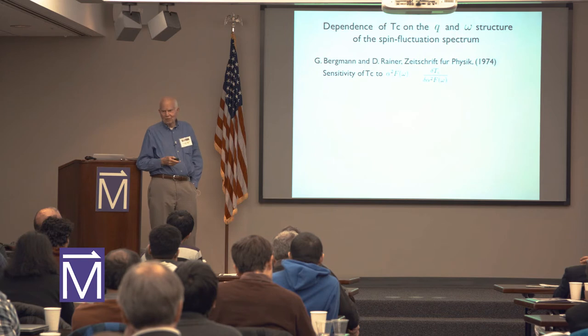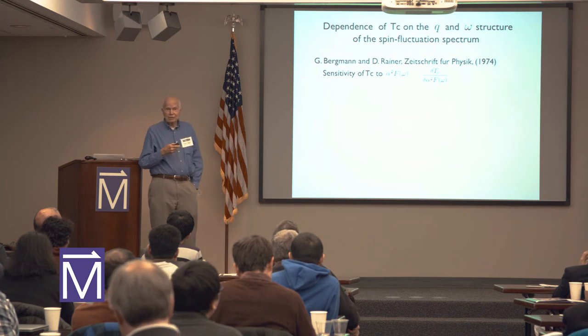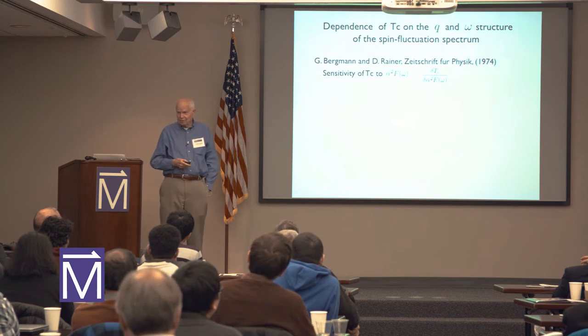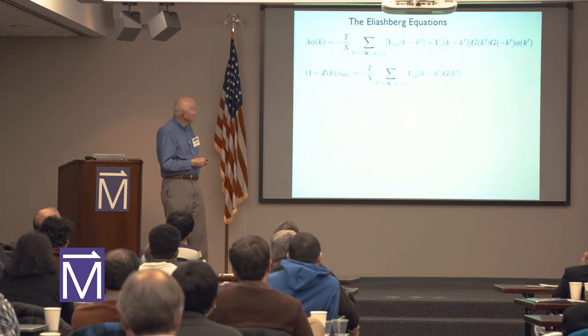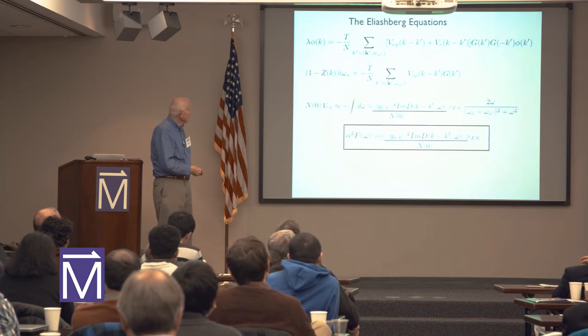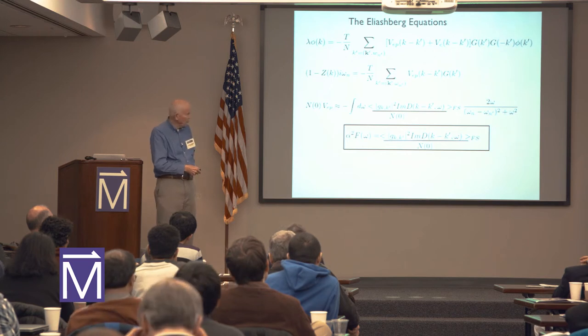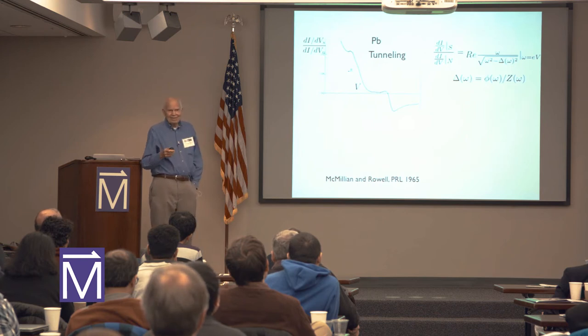We have to go back in time because this question was already addressed for the electron-phonon system by Bergman and Rainier, who wanted to understand the sensitivity of TC to alpha squared F omega. They calculated the functional derivative of TC with respect to alpha squared F omega. They began with the Eliashberg equations, which depend upon an average of phonon squared matrix element and a phonon Green's function.